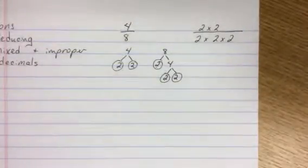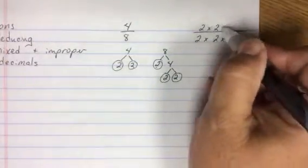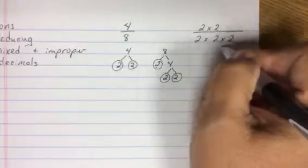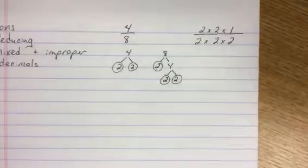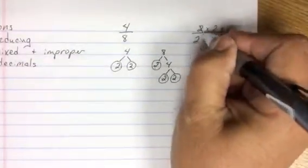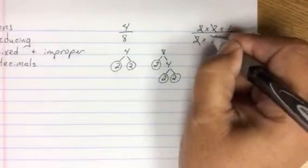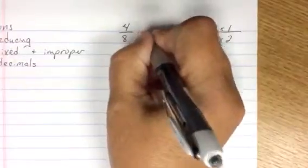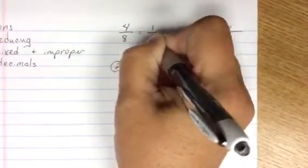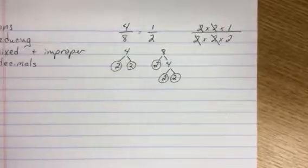Okay. So looking at this, I need the same number of factors on top as the bottom. So I'm going to add a one. So I look at this. This two and this two can cancel. This two and this two can cancel. And I'm left with a one over two. So four eighths reduces to one half. That is one method.